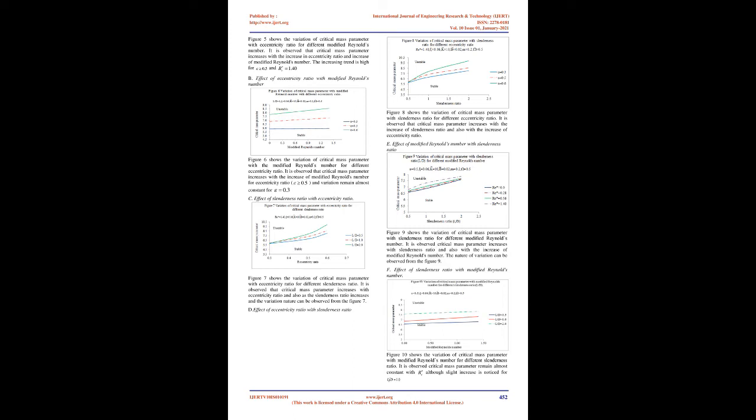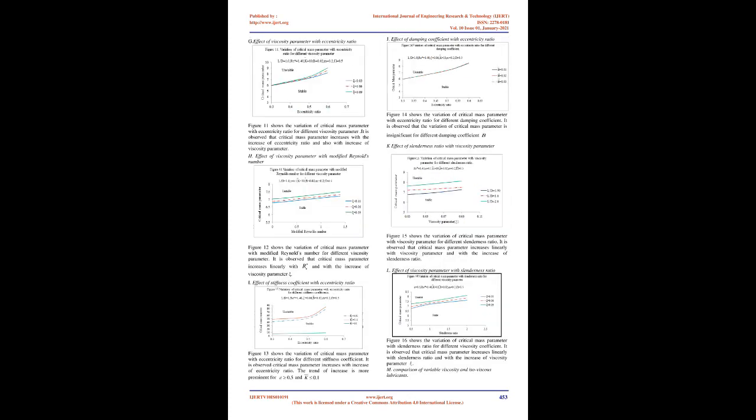Figure 6 shows the variation of critical mass parameter with modified Reynolds number for different eccentricity ratios. It is observed that the critical mass parameter increases with the increase of modified Reynolds number for various eccentricity ratios, while the variation remains almost constant for ε = 0.5. Figure 7 shows the variation of critical mass parameter with eccentricity ratio for different slenderness ratios. It is observed that critical mass parameter increases with eccentricity ratio, and also as the slenderness ratio increases, as can be observed from Figure 7.